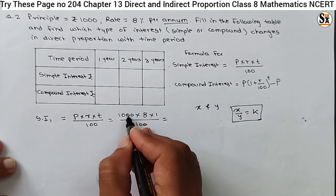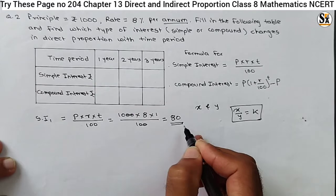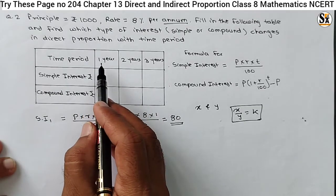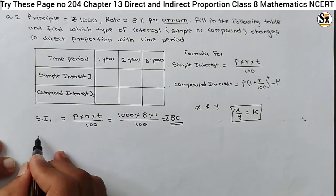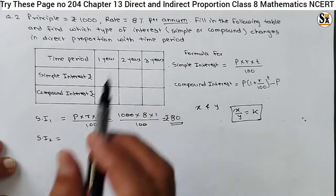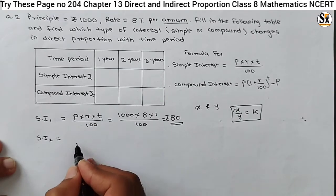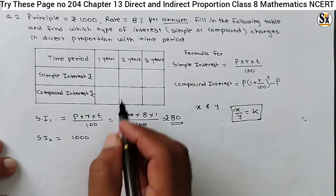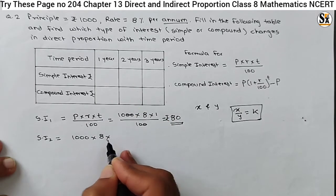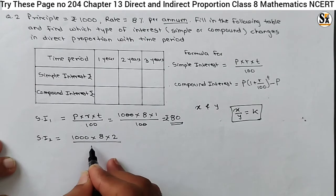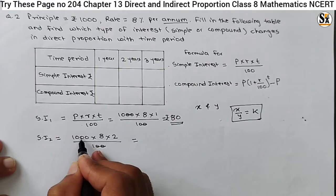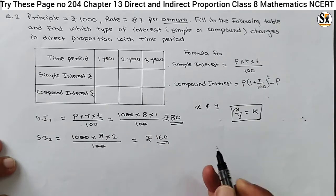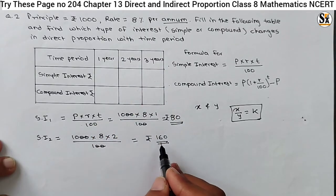So let's find out the simple interest first. SI1 for period one year: SI1 = P × R × T / 100 = 1000 × 8 × 1 / 100. The two zeros cancel, giving 10 × 8 = 80. So simple interest for period one year is Rs 80. Similarly, SI2 for period two years: 1000 × 8 × 2 / 100 = 160. So for the two year period, simple interest is Rs 160.